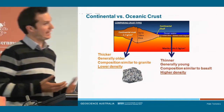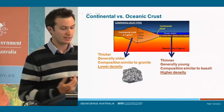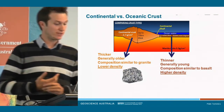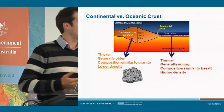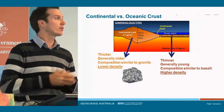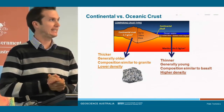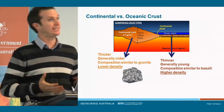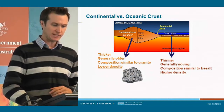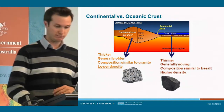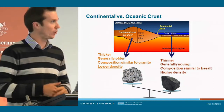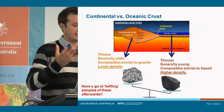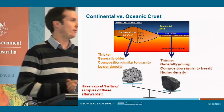Oceanic crust, on the other hand, underlies most of the major oceans on the Earth. It is generally thinner — about 7 to 10 kilometers thick — and a lot younger in general than most continental crust. Its composition is very similar to basalt, that black, very dense rock. In many cities they form the paving stones; in Melbourne's CBD, for example, you'll be walking on a lot of basalt. It has a higher density than granite, and we'll go through why this is important later on.